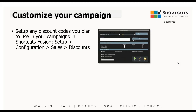The most important thing is if you're going to offer a discount or an offer within the campaign, make sure you set up a new discount reason — because you want to be tracking the return on investment. To set up a discount code, jump back into Shortcuts Fusion, go into setup, configuration, sales and discount, and press new. Type in the description of the discount, link it to whether it's a fixed amount, a percentage off, and then hit save. Once linked it will synchronize to the marketing platform so you can link it to that email.